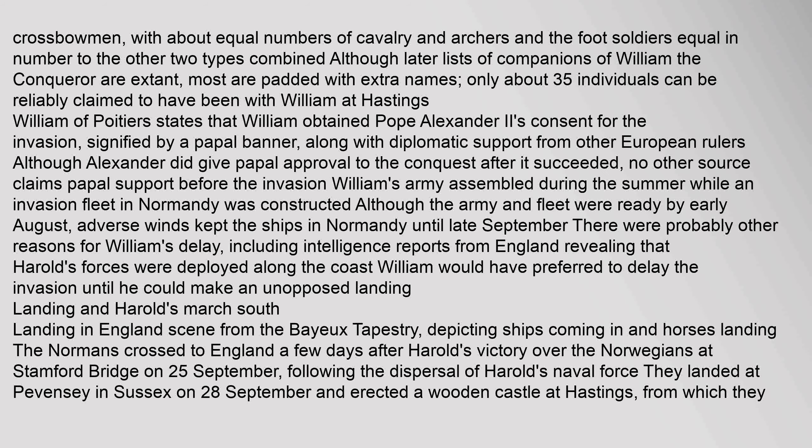The army would have consisted of a mix of cavalry, infantry, and archers or crossbowmen, with about equal numbers of cavalry and archers and the foot soldiers equal in number to the other two types combined. Although later lists of companions of William the Conqueror are extant, most are padded with extra names; only about 35 individuals can be reliably claimed to have been with William at Hastings. William of Poitiers states that William obtained Pope Alexander II's consent for the invasion, signified by a papal banner, along with diplomatic support from other European rulers.